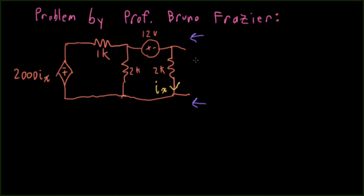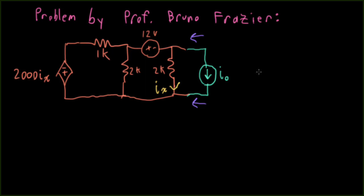The usual way to find a Thevenin equivalent circuit is to find the open circuit voltage, then short this and find the short circuit current, and divide the open circuit voltage by the short circuit current to get the Thevenin resistance. Here I'm going to use an alternative technique. I'm going to imagine that we have some sort of external current load — this is just something I'm introducing to find the Thevenin equivalent — and given that, I'm going to see what kind of voltage is induced.